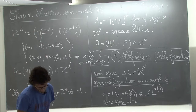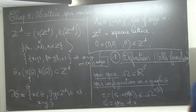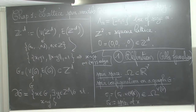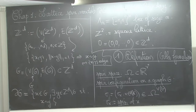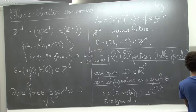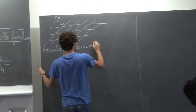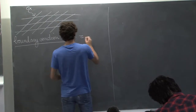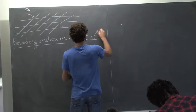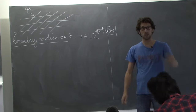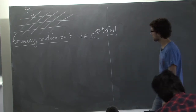Since we take subgraphs of Z^D, in addition to the spin configuration on G, we specify what is going on outside the graph. A boundary condition on G is simply a configuration tau in omega^{V(Z^D) \ V(G)}, so outside we specify a spin for every vertex not in the graph.